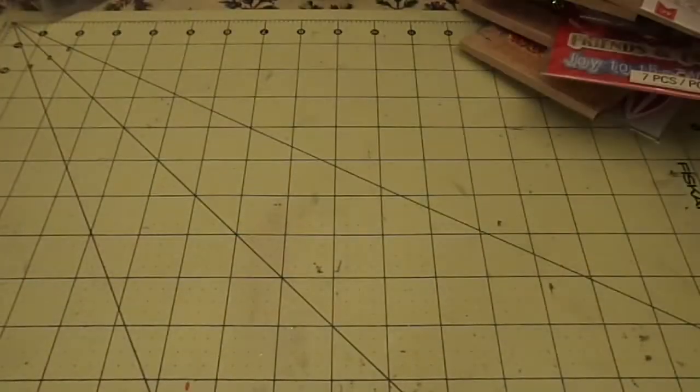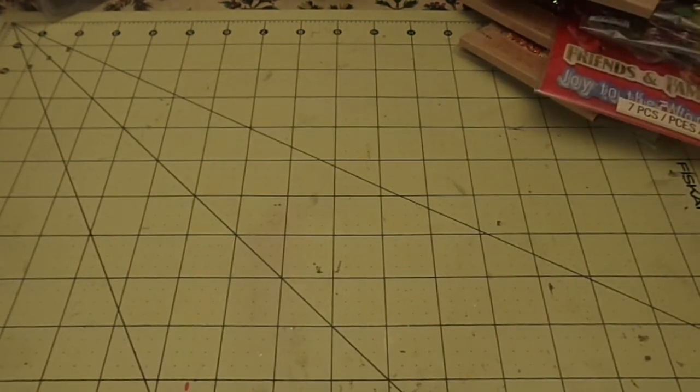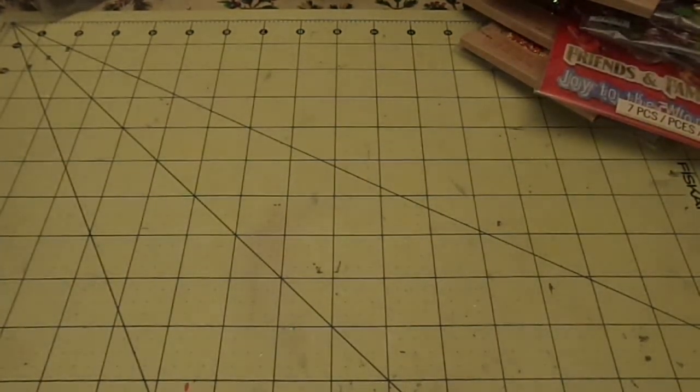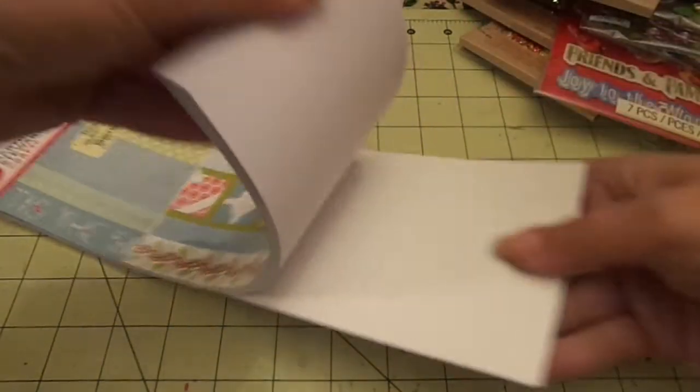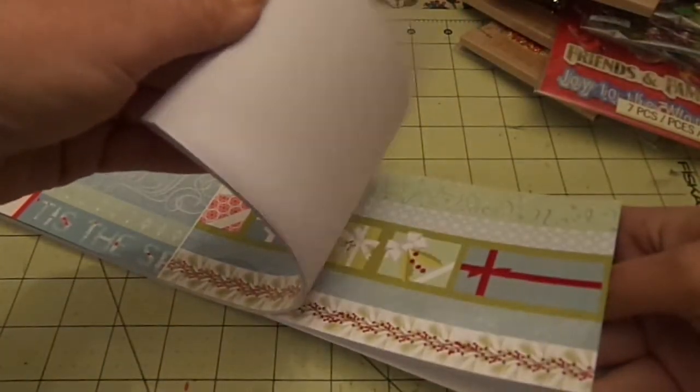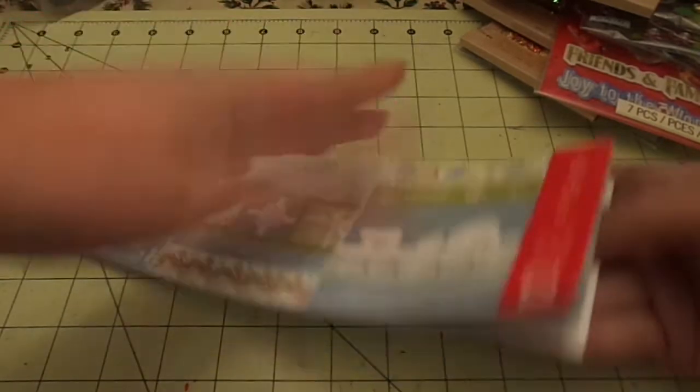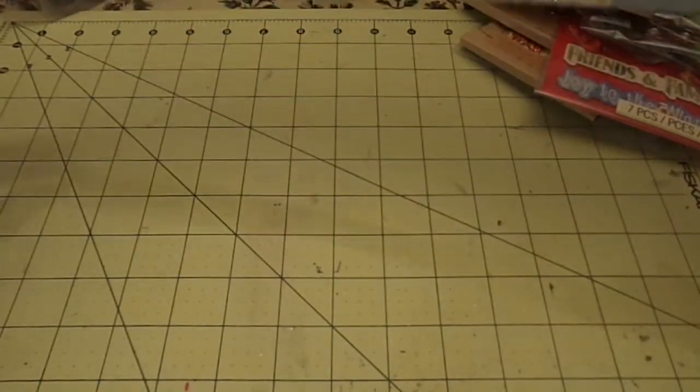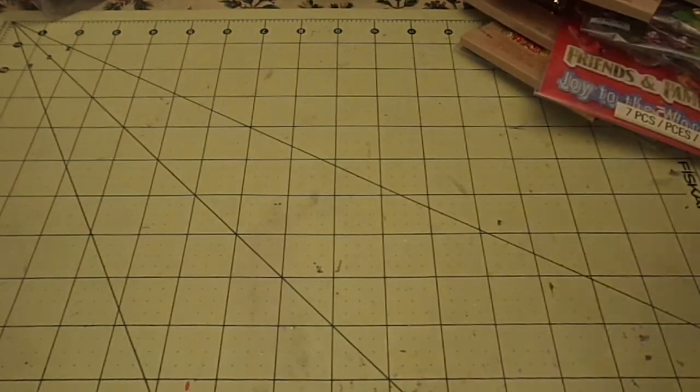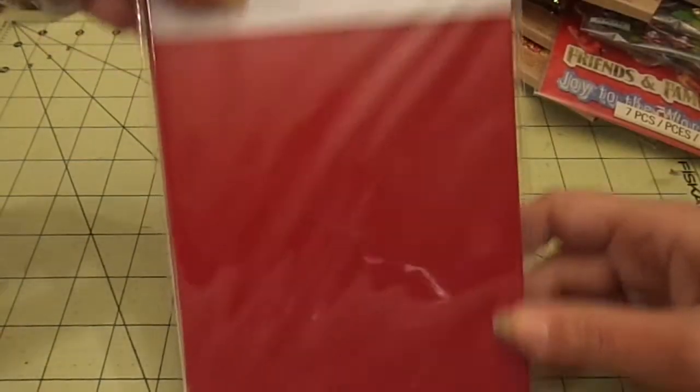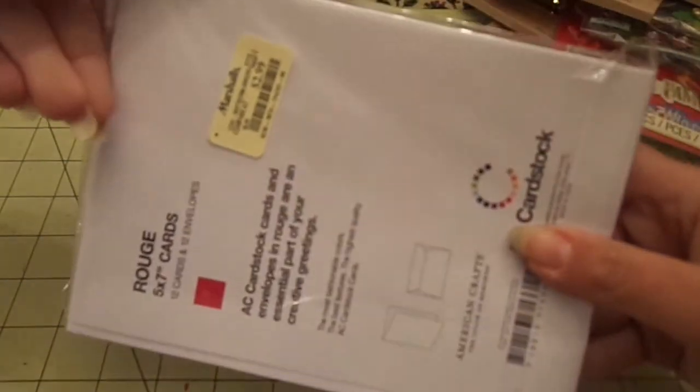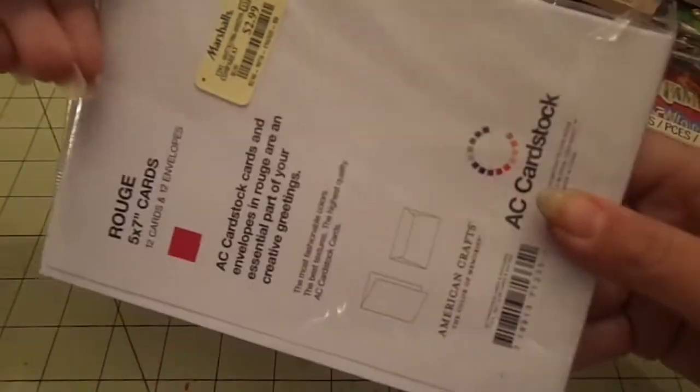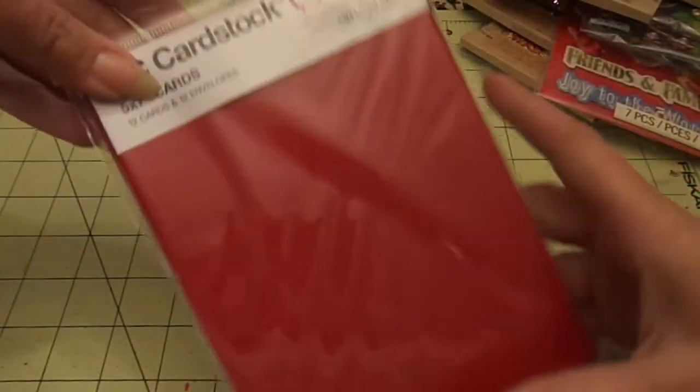I got the white foam glitter in Fox. And that was all the stickers. And then I found this Martha Stewart border pack for frosty elegance. And that was $2.99. I got this American Crafts 5x7 cards and envelopes in red. This was $2.99. And you get 12 cards and 12 envelopes.